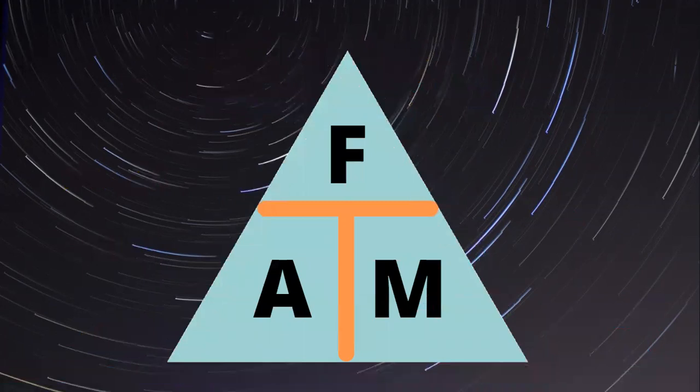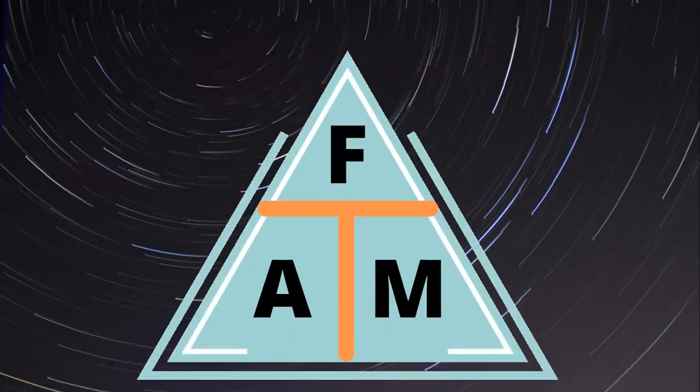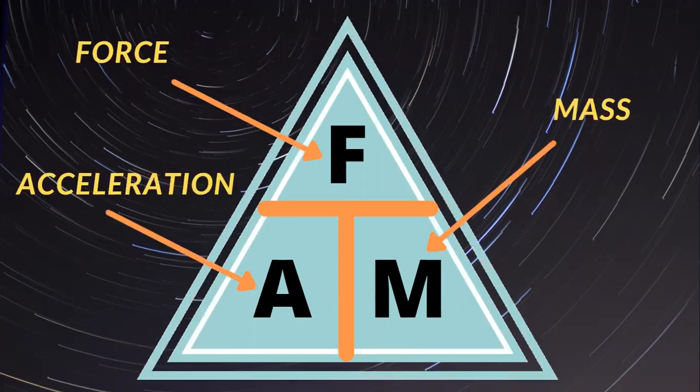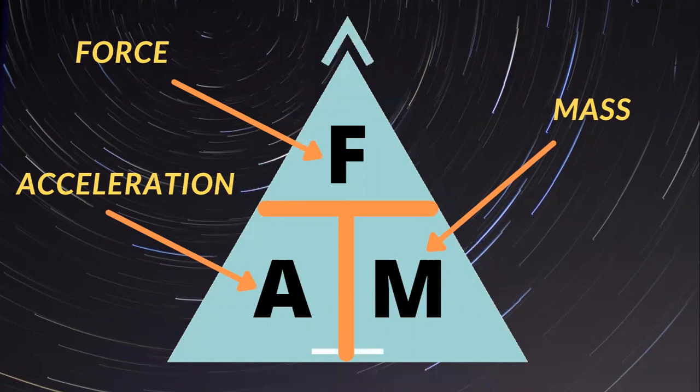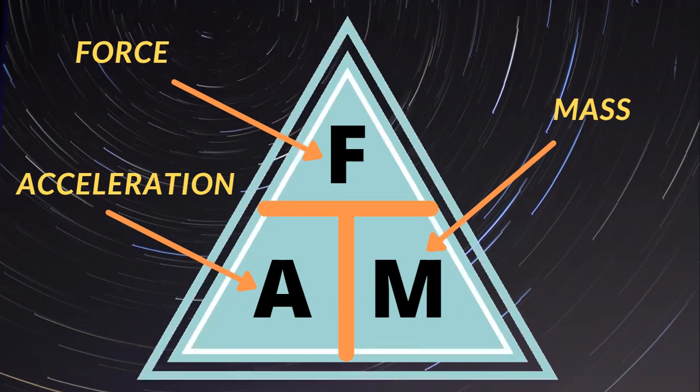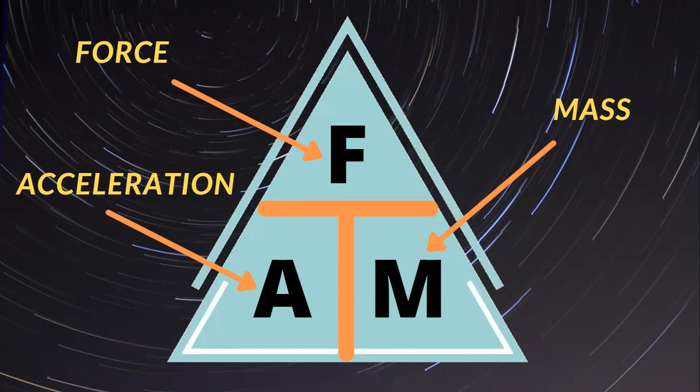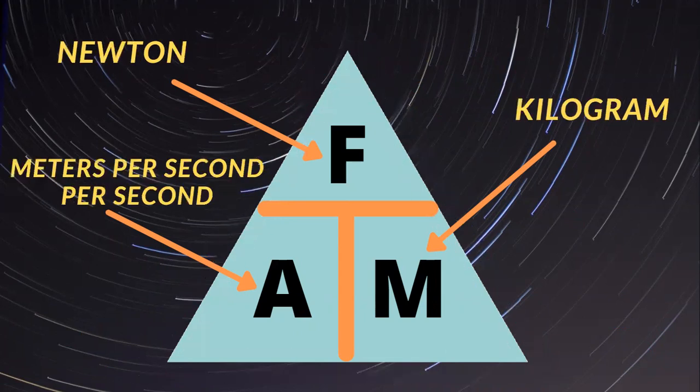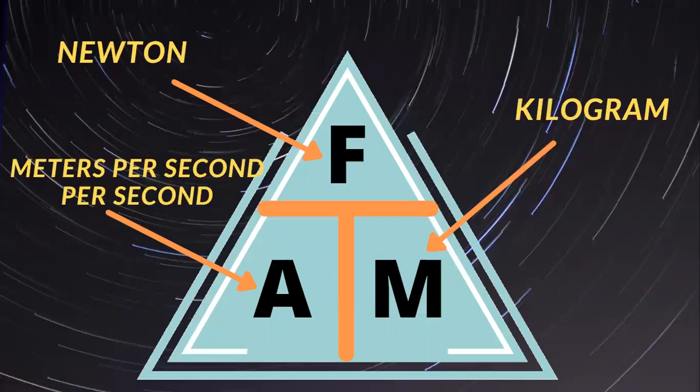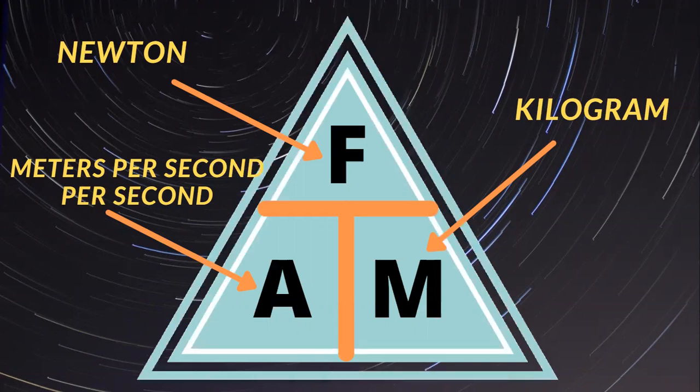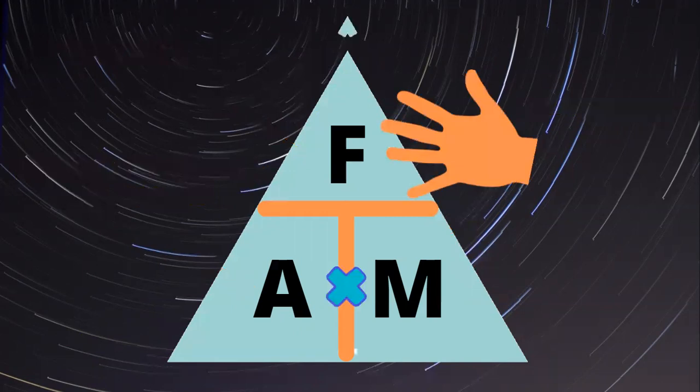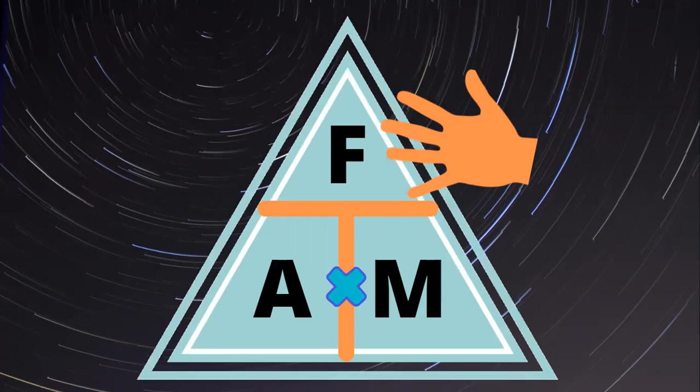Okay, so to understand Newton's Second Law, we have to remember FAM. All right, so F is for force, acceleration is A, and M is mass. And we are going to use this triangle to understand the different equations that we will use for Newton's Second Law. So just a reminder, force has the unit of Newtons, acceleration is meter per second per second, and mass is the kilogram. Now, you're going to ask me, how are we going to use this triangle to remember the equations?